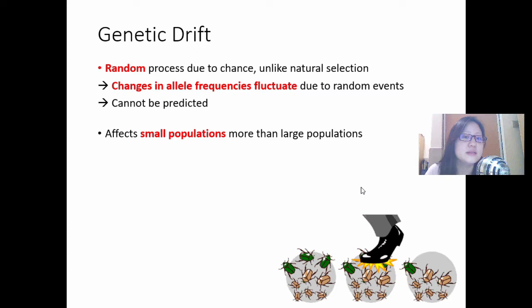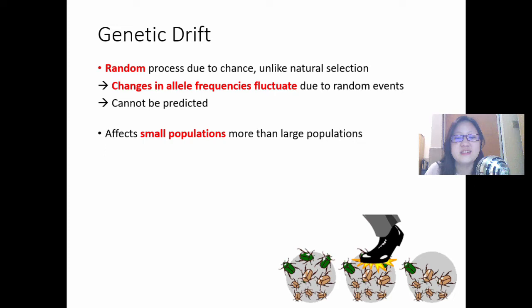Genetic drift affects small populations more than large populations. This makes sense — there are nine individuals in this population. If two of the green beetles die, that is a lot in proportion: two beetles out of nine is a lot. However, if two beetles die out of a million or a thousand beetles, that doesn't affect the allele frequency as much. Therefore, it affects small populations more.